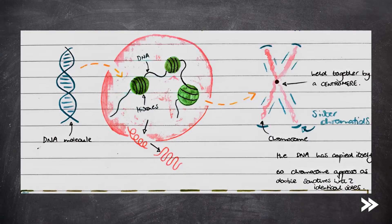Let's look at this diagram a bit more up-close. We have our DNA molecule, and if we zoom out, we have the DNA wrapped around proteins called histones. If we zoom out even further, we have the entire chromosome. Here we have sister chromatids held together by a centromere, and because the DNA has copied itself, the chromosome appears as a double structure with two identical sides.